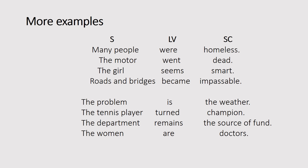Notice that 'homeless,' 'dead,' 'smart,' and 'impassable' are adjectives — your subject complement can either be an adjective or a noun. Like: 'The problem is the weather' — 'the weather' is a noun complementing 'the problem.' 'The tennis player turned champion' — 'champion' is also a noun. If it's an adjective functioning as SC, you call this a predicate adjective. If it's a noun, you have a predicate noun.